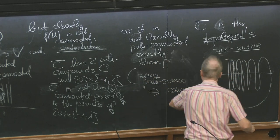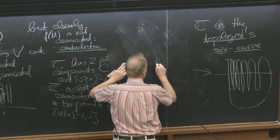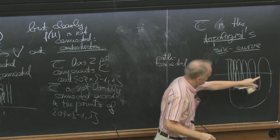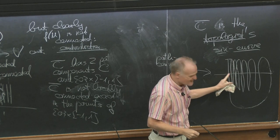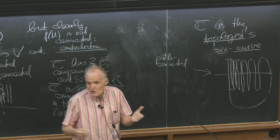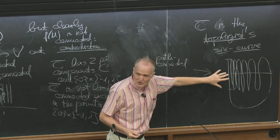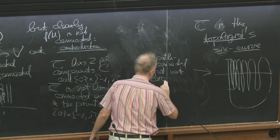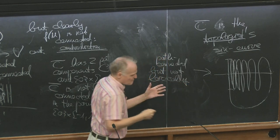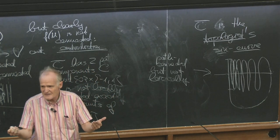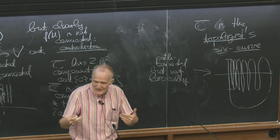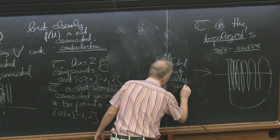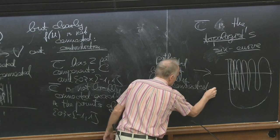So this is now path connected, but it's not locally path connected — locally it's the same as before. So this is path connected but not locally path connected. One is a global thing, the other is a local thing — it's not the same.